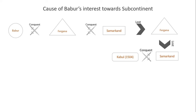Babur formed a partnership with Ismail I, ruler of Safavid Iran, and reconquered parts of Turkestan including Samarkand, but he again lost Samarkand for the third time.